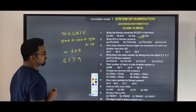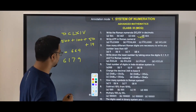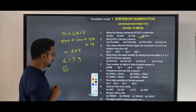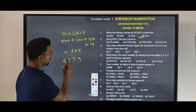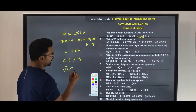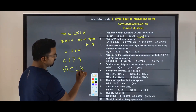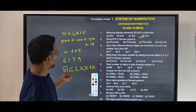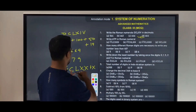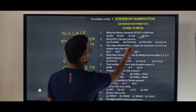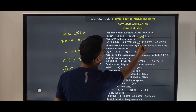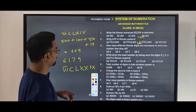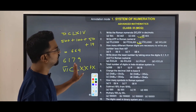Next question: write 6179 in Roman numerals. So 6000 means we write M six times, 100 is C, 70 is LXX, and 9 is IX. The answer is option A: MMMMMMCLXXIX.